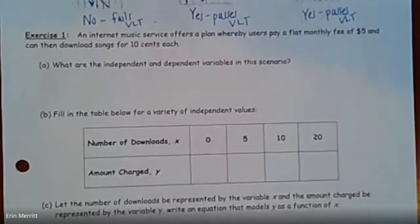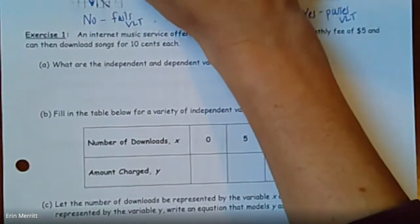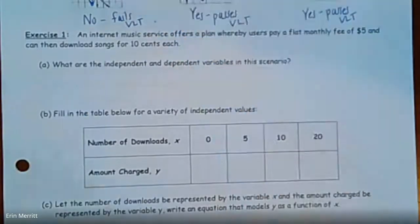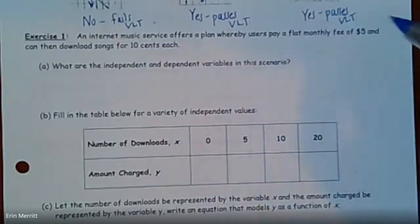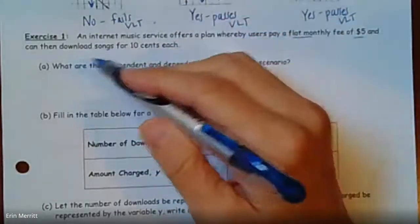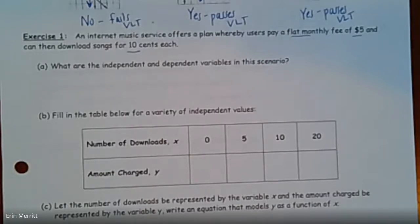Really going back to kind of some algebra one stuff here. This next little section references a basic word problem that you would probably remember from algebra one. So the information that's given, it's saying an internet music service offers a plan where users pay a flat monthly fee, five bucks, and then they can download songs for 10 cents each. So obviously music platforms have come a long way, but it used to look something like this.